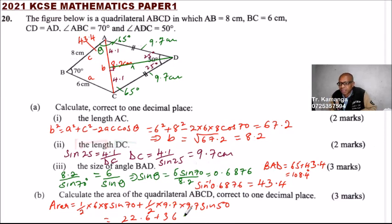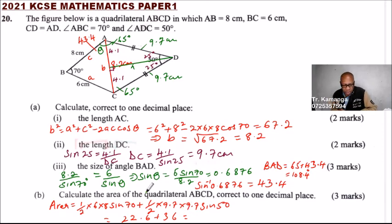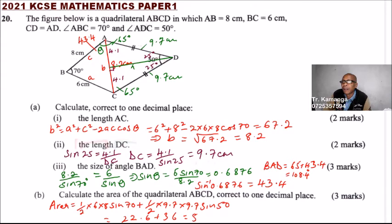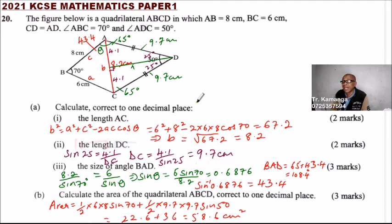Adding the two areas: 22.6 plus 36.0 gives 58.6 square centimetres. So the area of the quadrilateral ABCD is 58.6 cm².